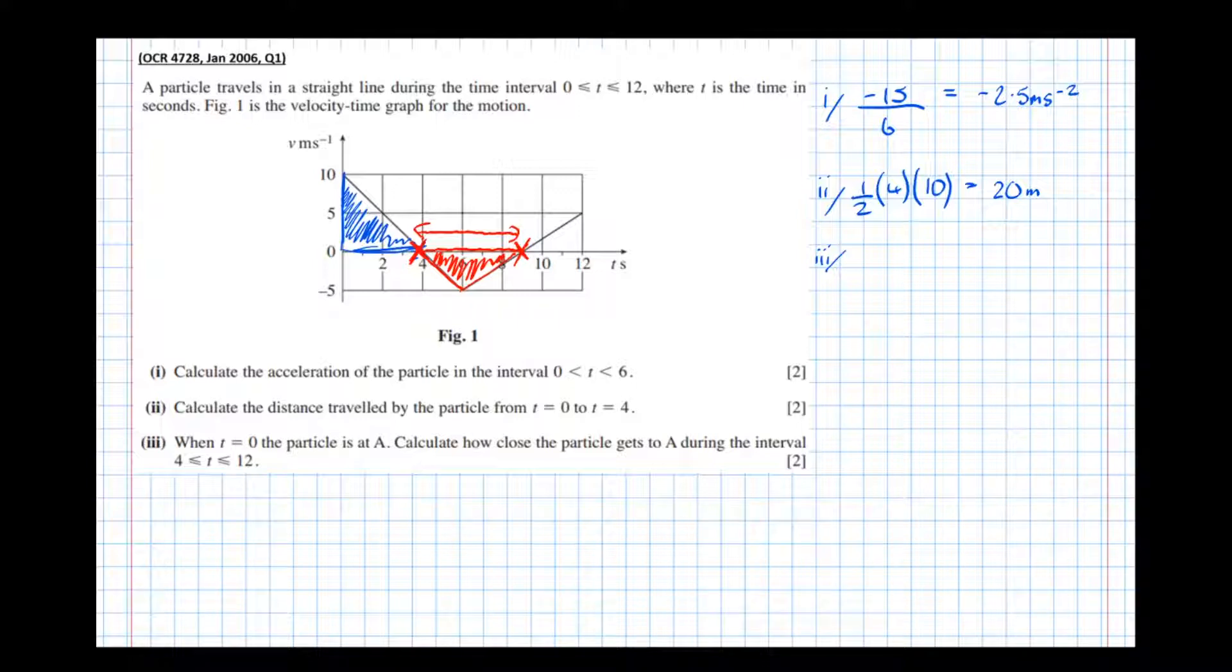Again we'll find the area of this triangle, so the base goes from 4 to 9 which is 5. The height we can see is minus 5. So a half times 5 times minus 5 is minus 12.5 meters that is displaced.